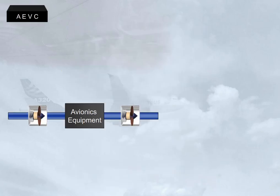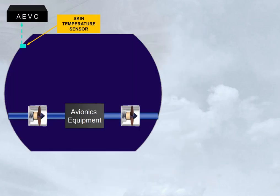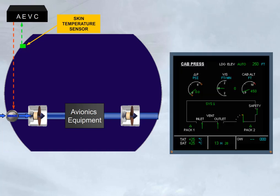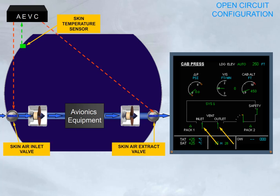On the ground, provided that the skin temperature is above a specified value, air is taken from outside the aircraft via a skin air inlet valve. The air is blown through the avionics equipment, extracted, and then discharged overboard via a skin air extract valve. As both valves are open, this is the open circuit configuration.